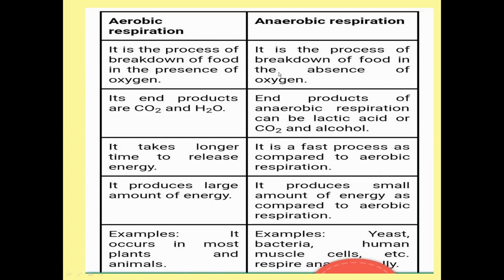The differences between aerobic and anaerobic Respiration: Anaerobic Respiration does not require any oxygen — it takes place in the complete absence of oxygen. Aerobic Respiration requires oxygen. The end products of aerobic Respiration are CO2 and water, whereas the end products of anaerobic Respiration are lactic acid, CO2, or alcohol. Aerobic Respiration takes a longer time, while anaerobic Respiration is a very fast process. Aerobic Respiration produces a large amount of energy, while anaerobic Respiration produces far less energy. Aerobic Respiration occurs in most plants and animals; anaerobic Respiration occurs in yeast, bacteria, or human muscle cells.